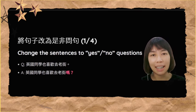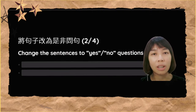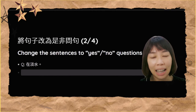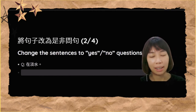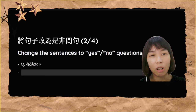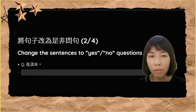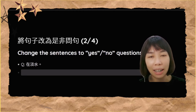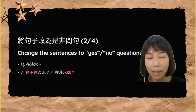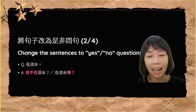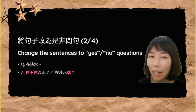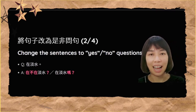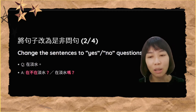好，那我们来看下一个问题。下一个问题是：在淡水。好，在淡水改成是非问句。还记得是非问句在中文有两个方法，第一个是加「吗」，还有我们可以用「在不在」。在不在淡水，还是在淡水吗？你答对了吗？